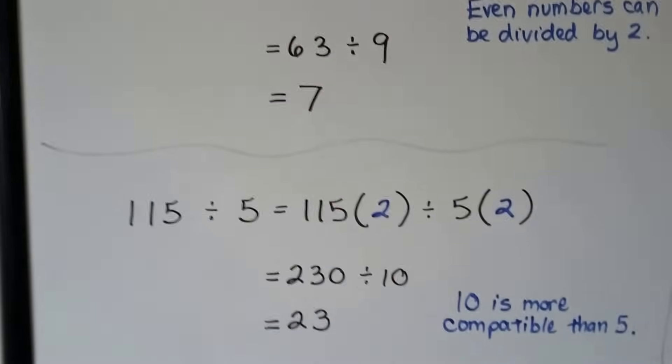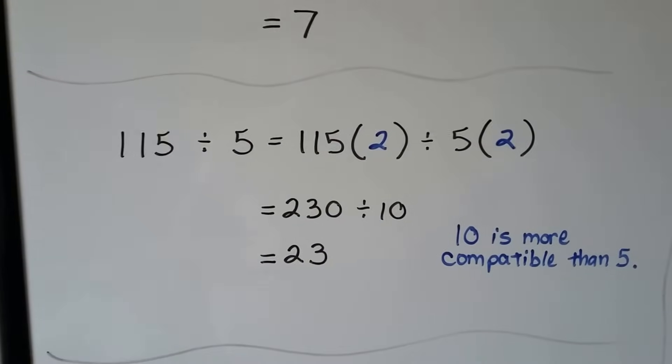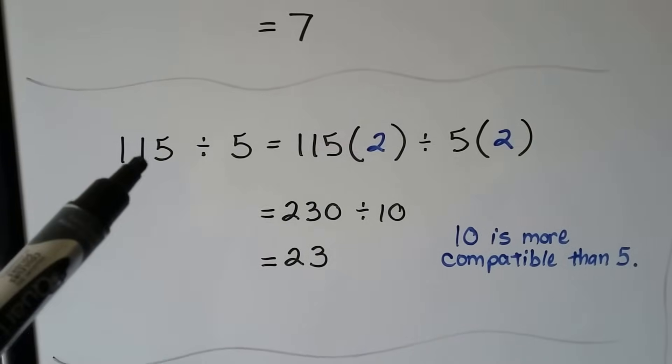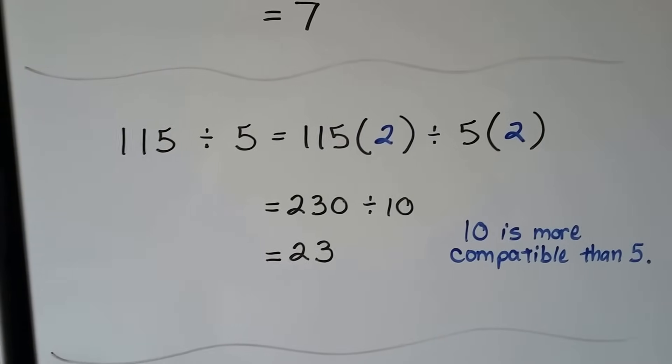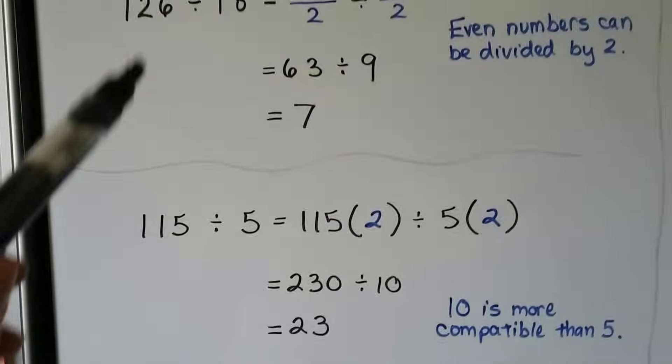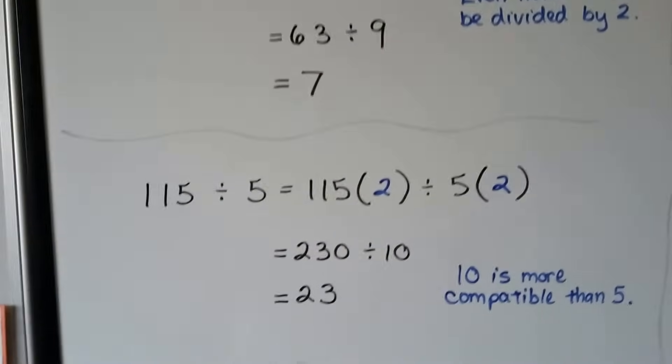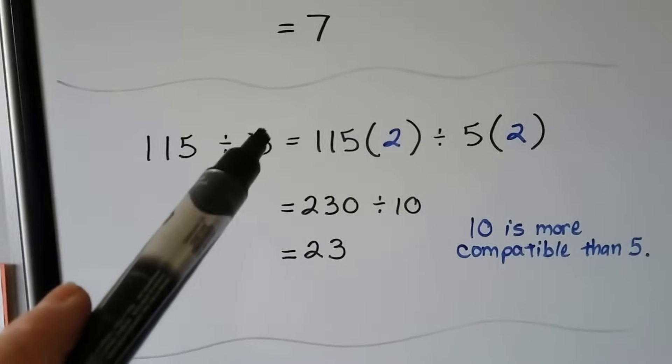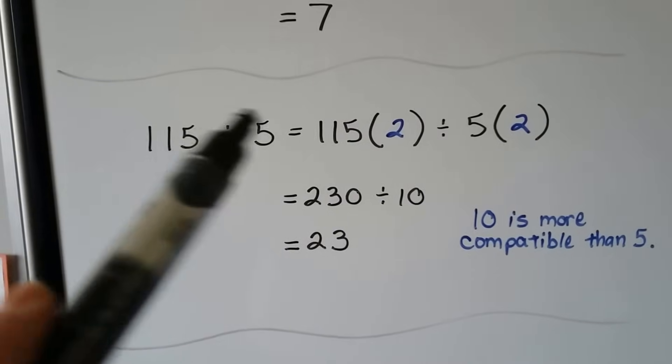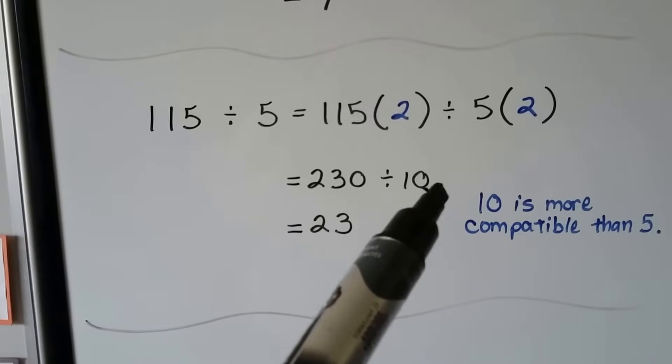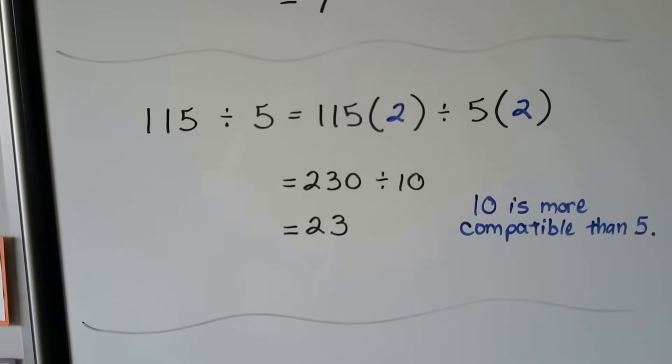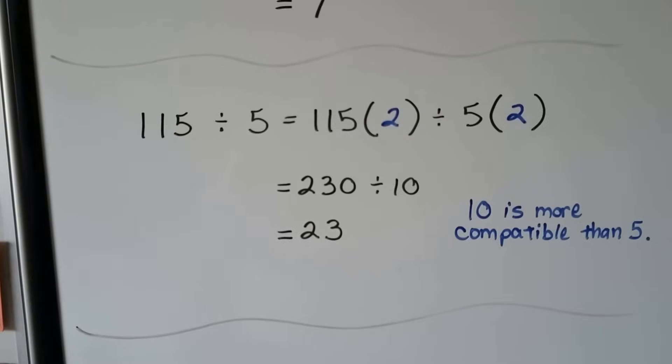Let's try one more. We have 115 divided by 5. We can multiply this by 2 and multiply this by 2. In this one, we divided it by 2 and divided it by 2. But if we want to get this to be 10, which is more compatible than 5, we just multiply both of them by 2. So, we have 230 divided by 10. That's easier to do with mental math. That's 23.